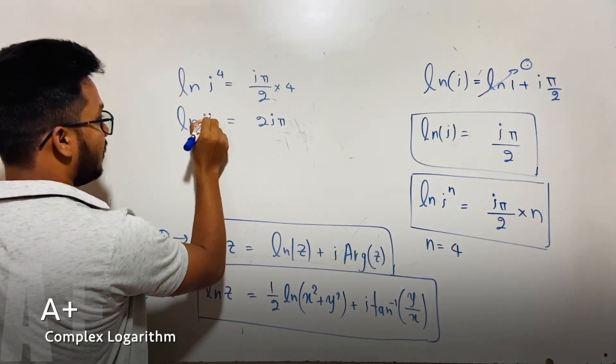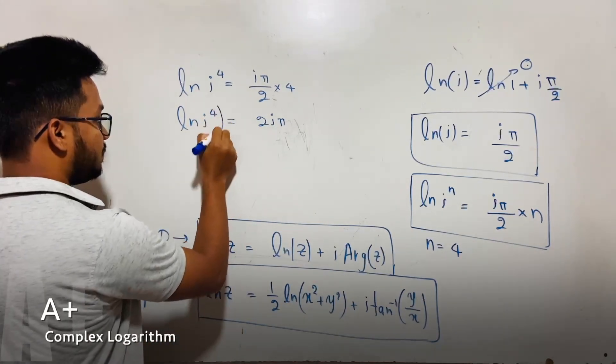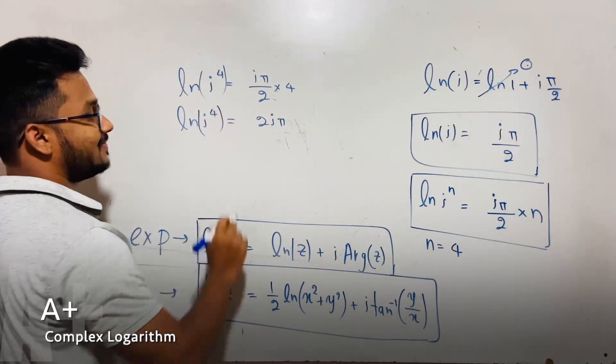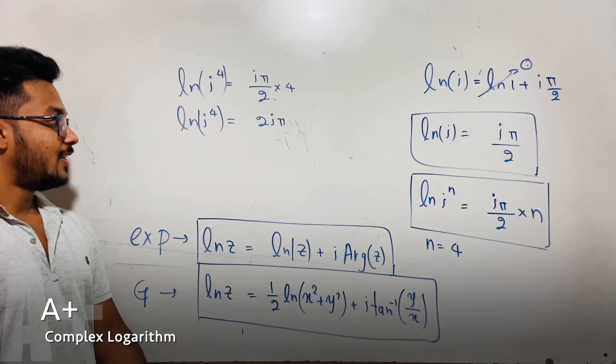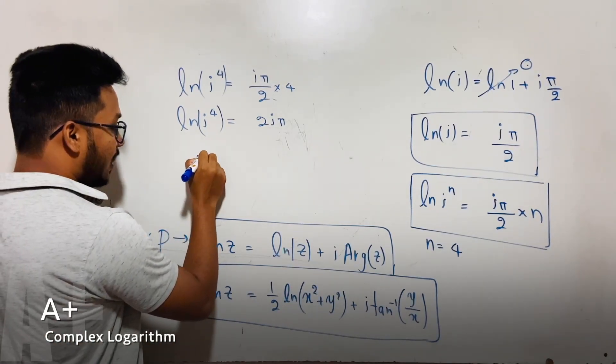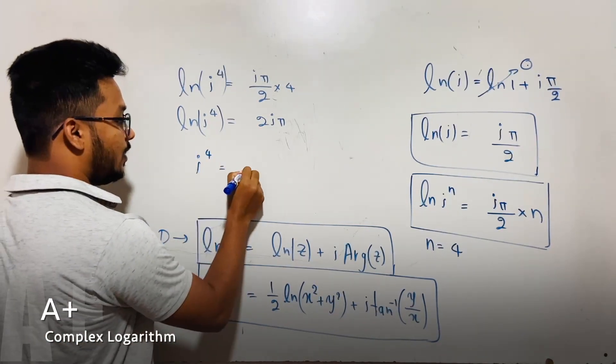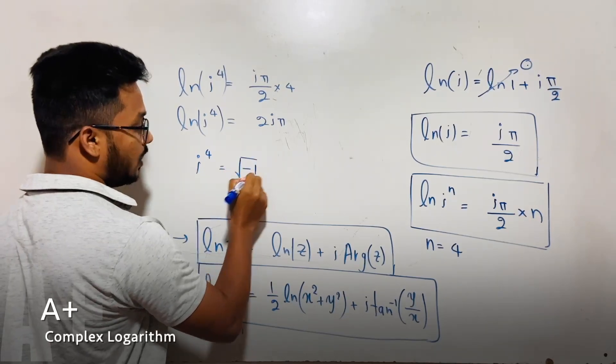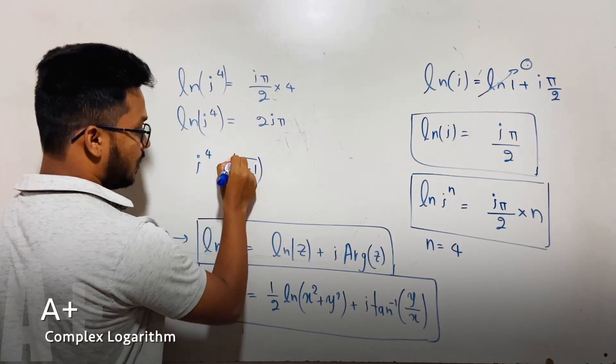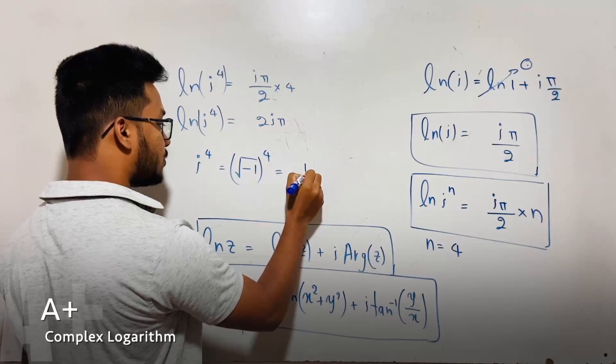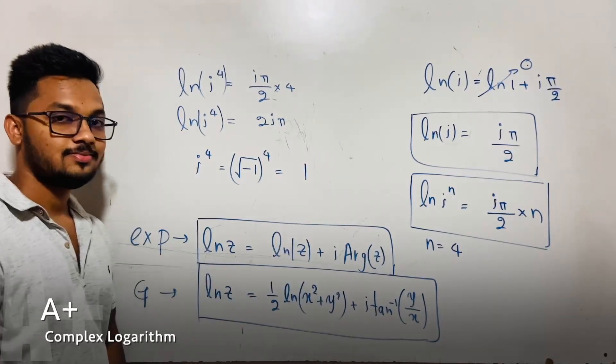ln i to the power 4. Okay, what's the value of i to the power 4? i is the square root of minus 1 to the power 4, which equals 1.